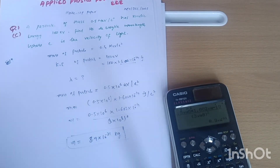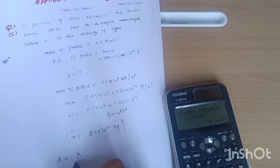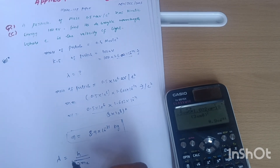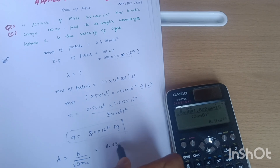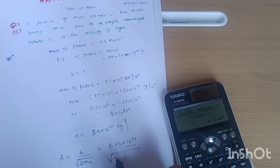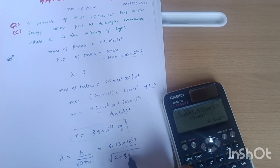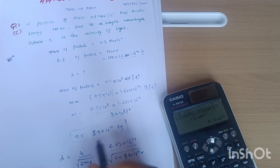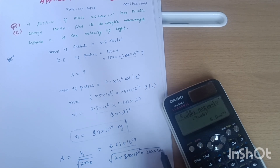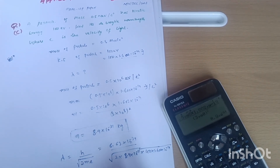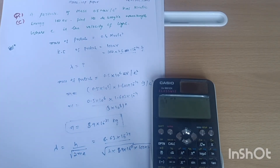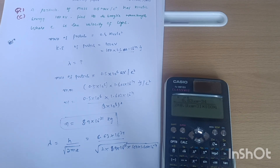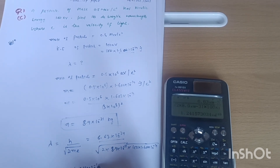The formula for de Broglie wavelength is lambda = h divided by the square root of 2mE. The value of h is 6.63 × 10⁻³⁴. Substituting: mass is 8.9 × 10⁻³¹, and kinetic energy E is 100 × 1.602 × 10⁻¹⁹ joules. Calculating this gives lambda = 1.24 × 10⁻¹⁰ meters as the de Broglie wavelength.